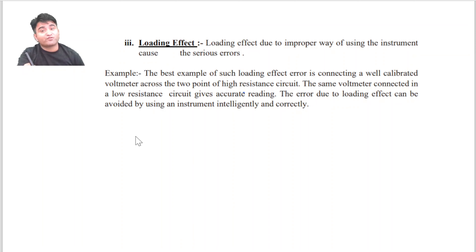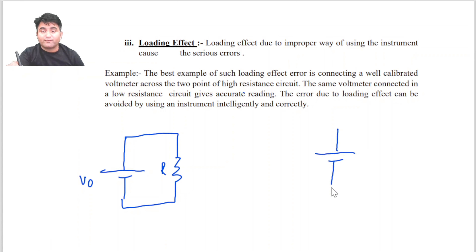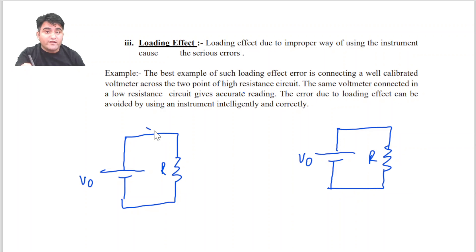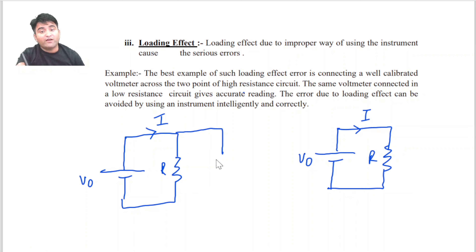Loading Effect Error किसकी वजह से होता है? Due to improper way of using the instrument. इसे एक example से समझेंगे: हम एक battery लेंगे, एक voltage source apply करेंगे, और इसे एक resistor के साथ connect करेंगे। Battery की value है V0, resistor की value है R। जब इस resistor में से current flow करेगी, तो हमें resistor के across voltage drop मिलेगा। उस voltage drop को measure करने के लिए हम measurement instrument use करेंगे।